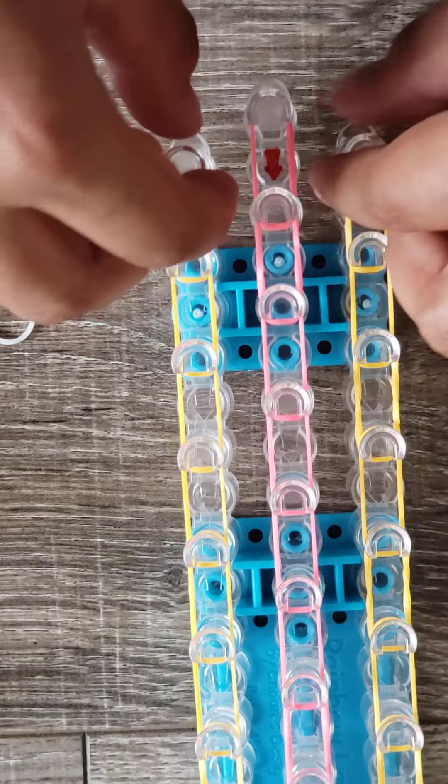Now you're gonna flip your loom over so then that the arrow is pointing away from you and we'll start looming. So as you can see the three pegs have the cap band on top.